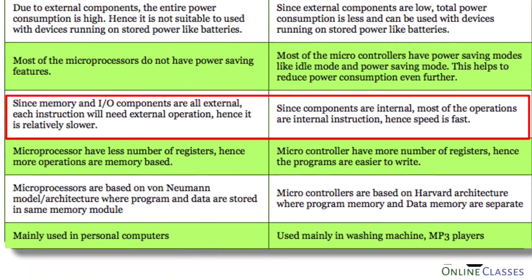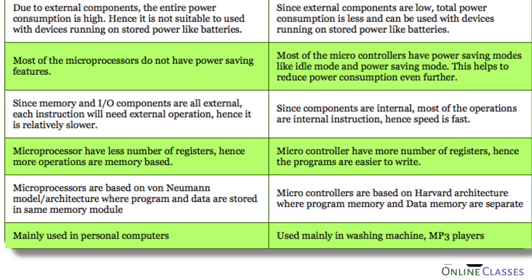An important point is that in the microprocessor, memory is externally connected, so memory-related operations — fetching instructions and data — take a little more time compared with microcontrollers. In the microcontroller, memory RAM and ROM are all internal, so instruction fetch and data operations are done internally and are faster.